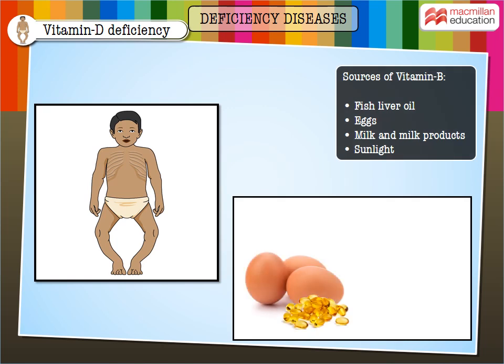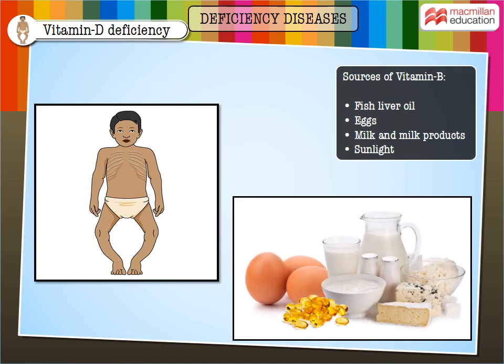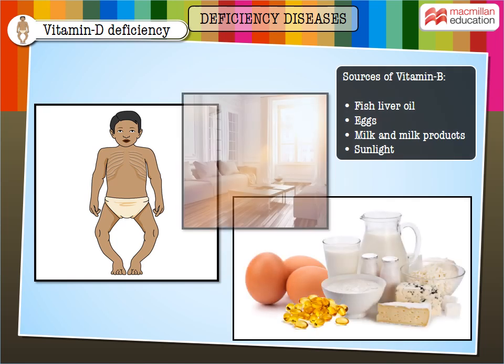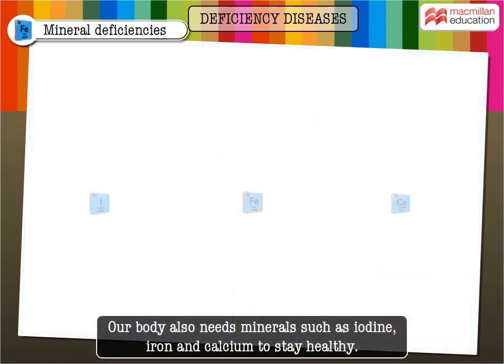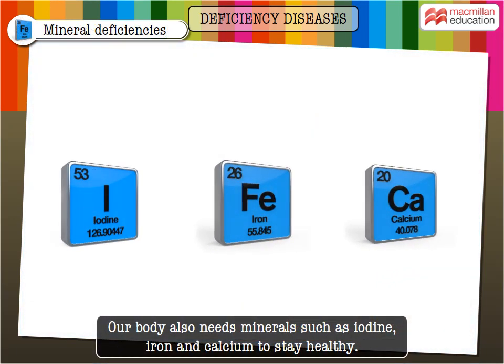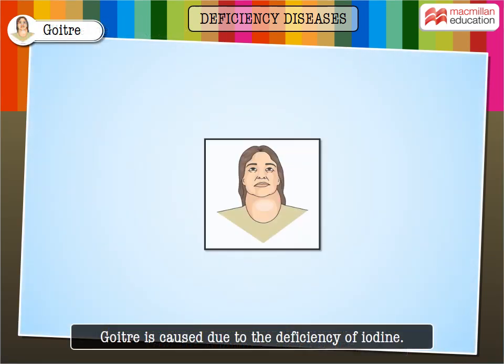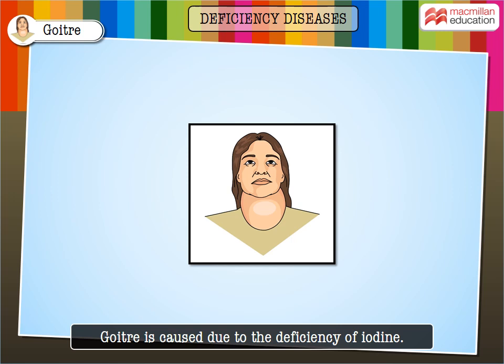Deficiency of vitamin D causes rickets. Weak, thin, and brittle bones are the symptoms of rickets. Fish liver oil, eggs, milk and milk products, and ample exposure to sunlight are excellent sources of vitamin D. Our body also needs minerals such as iodine, iron, and calcium to stay healthy.